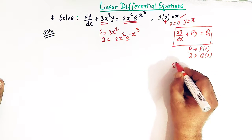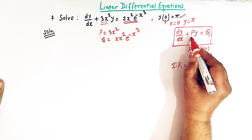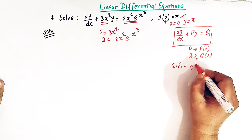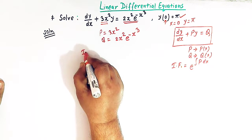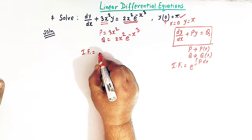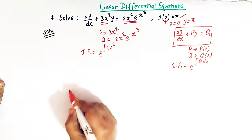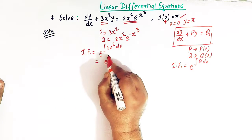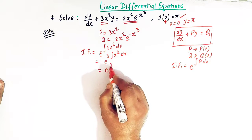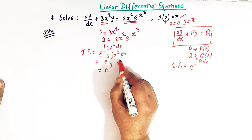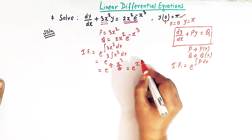Once we've established the equation is of standard form, we find the integrating factor, which is e raised to the integral of P dx. So the integrating factor is e^(∫3x² dx) = e^(3 · x³/3). The 3s cancel, leaving e^(x³).